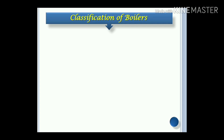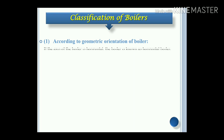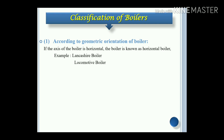Classification of boilers. According to the geometric orientation of the boiler, if the axis of the boiler is horizontal, the boiler is known as a horizontal boiler. Examples: Lancashire boiler, locomotive boiler.